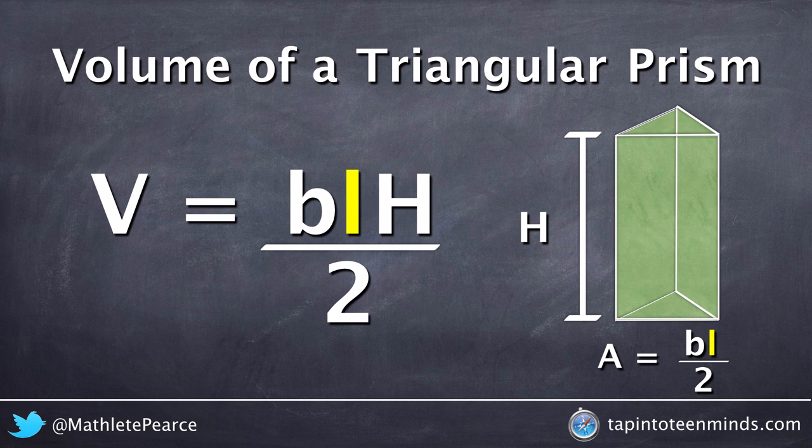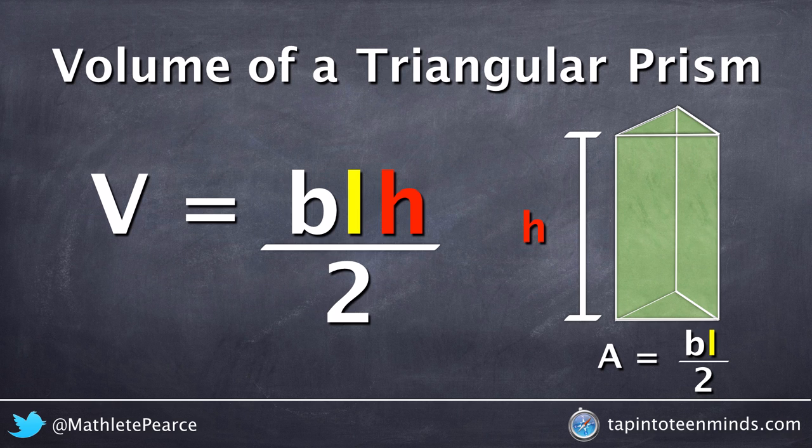Some have used the letter L to replace the height of the triangle, and thus the formula would then be the base times the length of the triangle times the height of the prism divided by two.